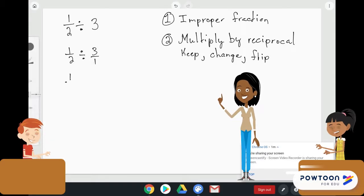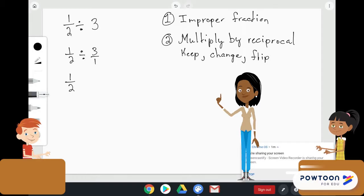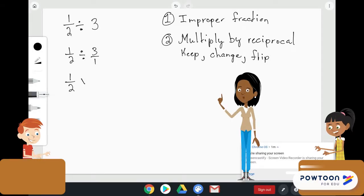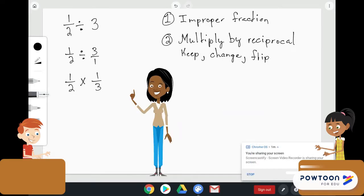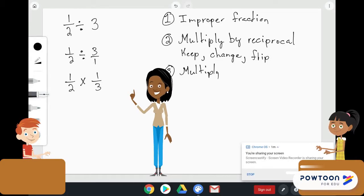So, what I'm going to do is leave the 1 half as it is. I'm going to change the division sign to multiplication. And all I have to do is flip 3 over 1, which would give me 1 third. The next thing I'm going to try to do is to simplify before I multiply. But really, there's nothing here to be simplified. So, honestly, I just need to multiply across.